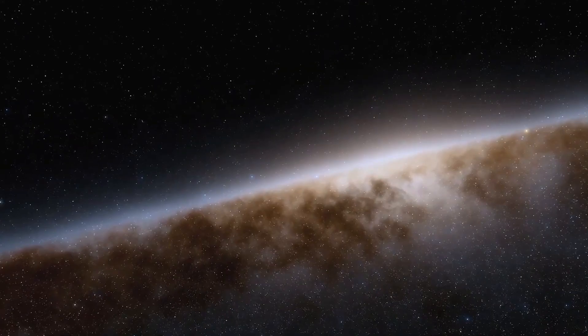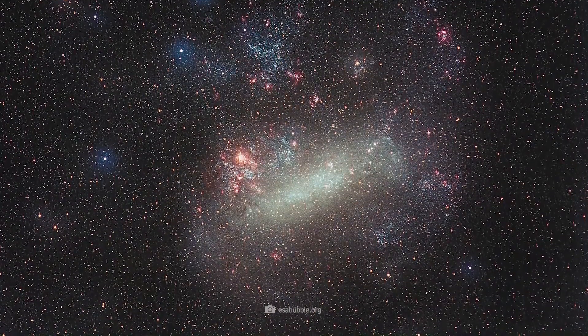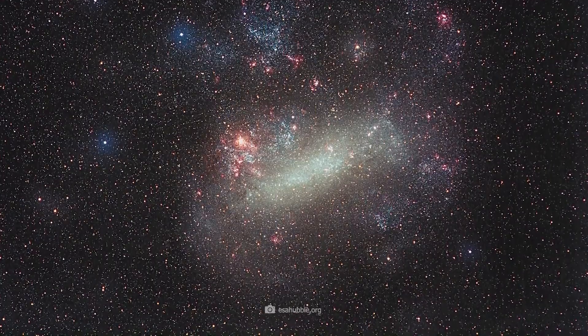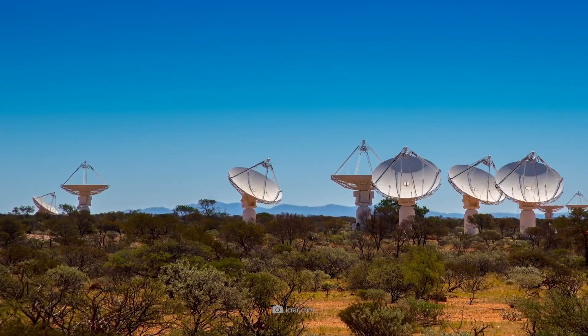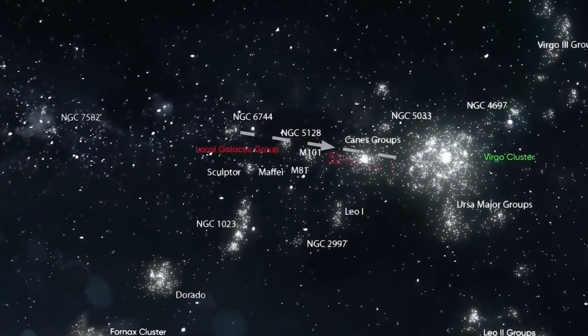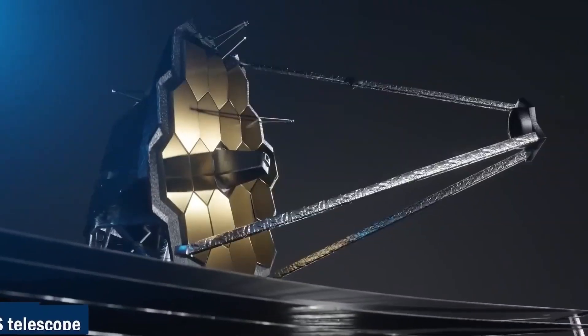Galaxies tend to cluster in groups, clusters, and superclusters, forming intricate networks across the universe. This observed structure supports the predictions made by the Big Bang theory. Gravity's role in shaping the distribution of matter and the formation of galaxies further aligns with Big Bang predictions. Galaxy clusters and the cosmic web-like structure of the universe provide strong evidence for the theory's validity.